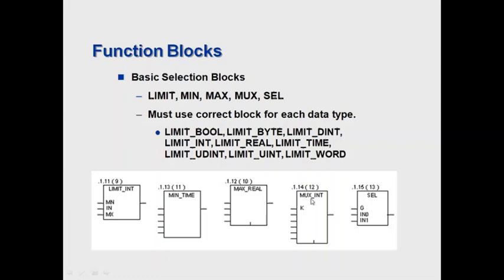The mux block will take this K input, which is our selector input, and determines which of these input pins, which value will be set to the output. So for example, if this K value was zero, this first pin would be output here. If it was one, the second pin would be output here. Two, three, four, so on. So whatever the input value is on this K will determine which value is represented on the output.